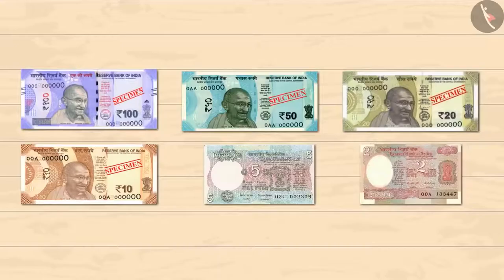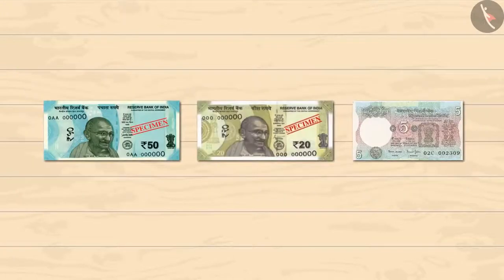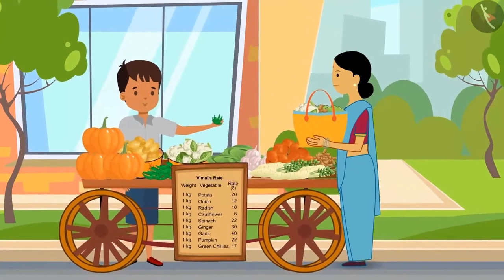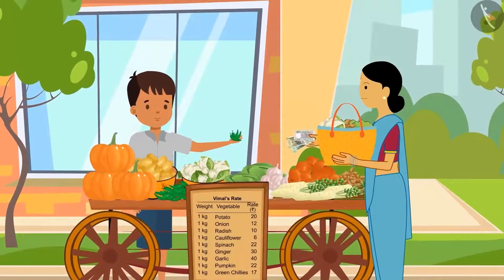A few notes have been placed in front of you. Let's help Sharma auntie to add the total price. You can use each note only once. You can pause the video to choose the note on your own. Have you guessed the same? Well done. Look, Vimal is giving some green chillies to his aunt for free. You saw Sharma auntie gave 75 rupees to Vimal.